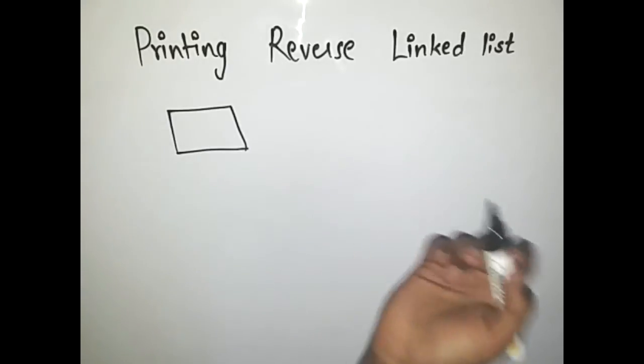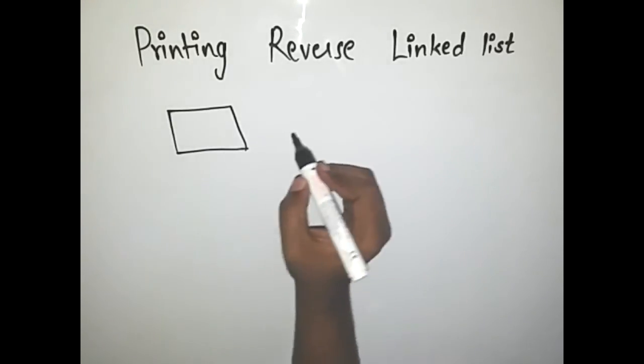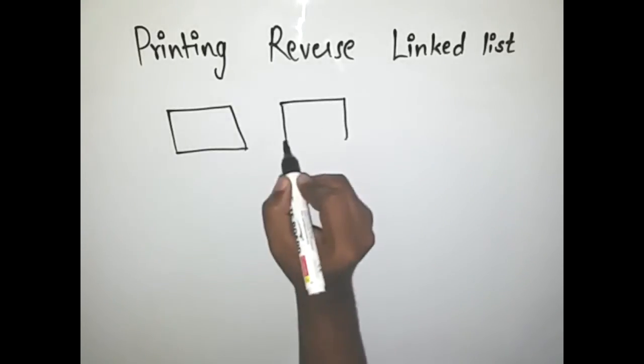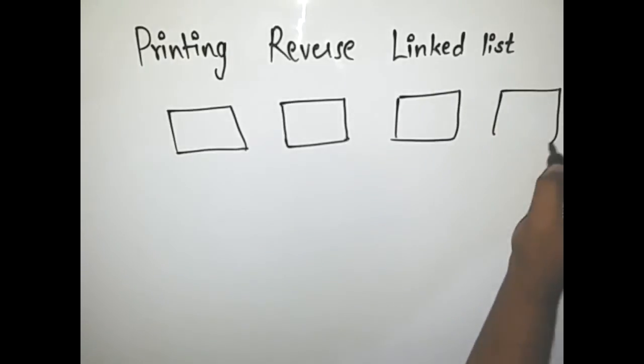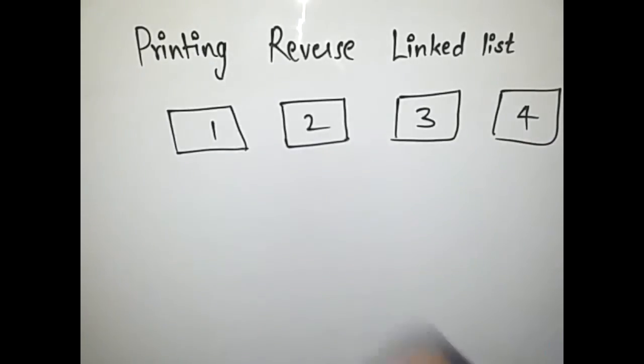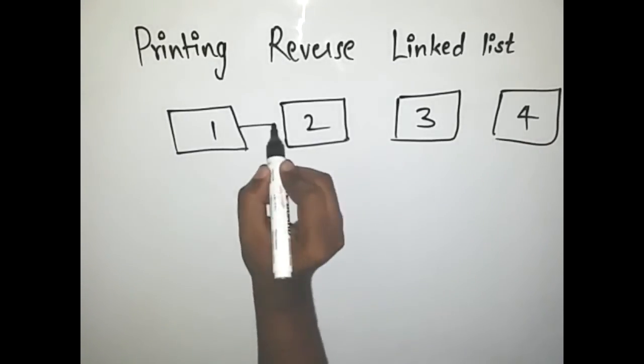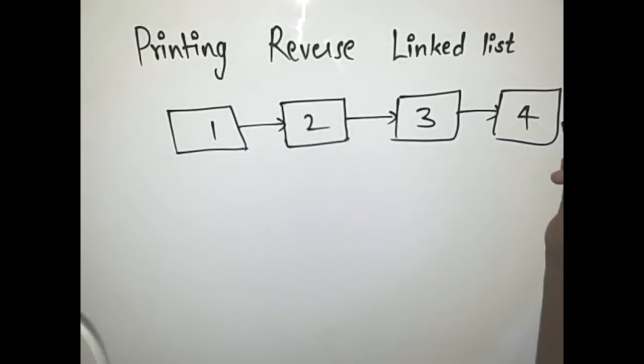Let's take an example of a linked list. Suppose we have four numbers: one, two, three, and four. We take four nodes and we store the numbers in the nodes. And then every node has a pointer which points to the next node, and then the last node points to null.